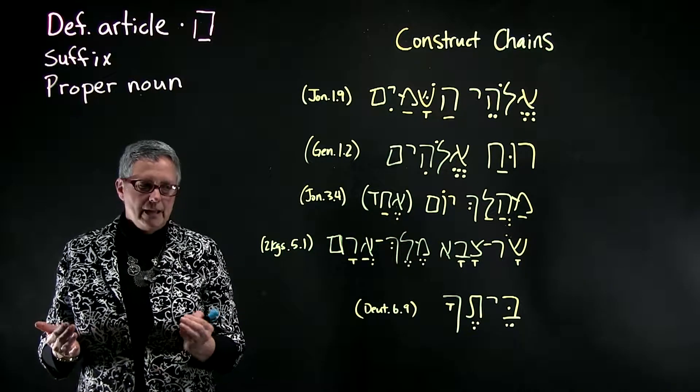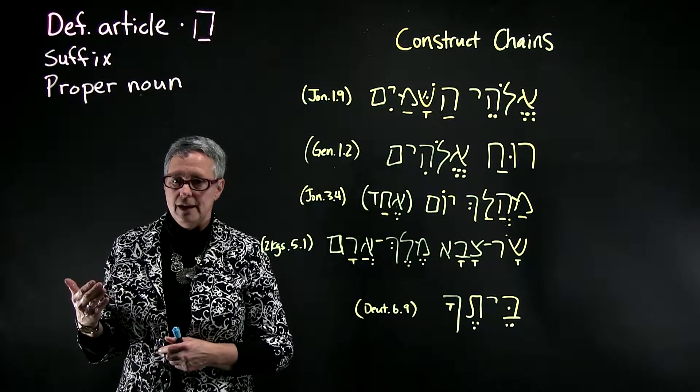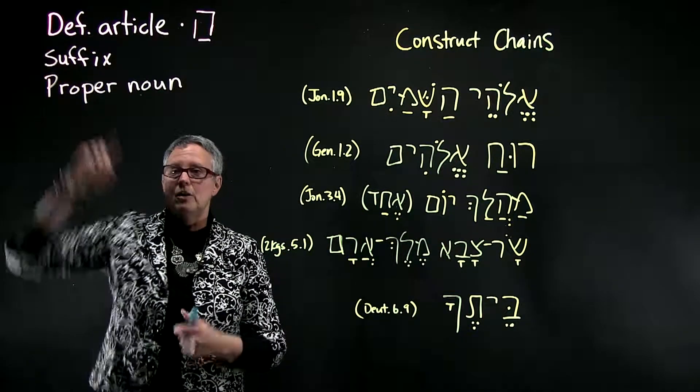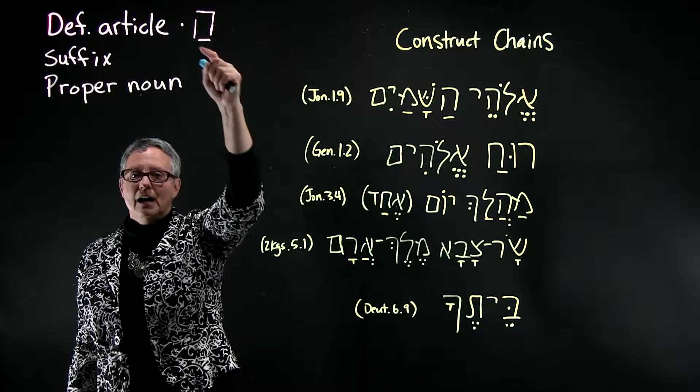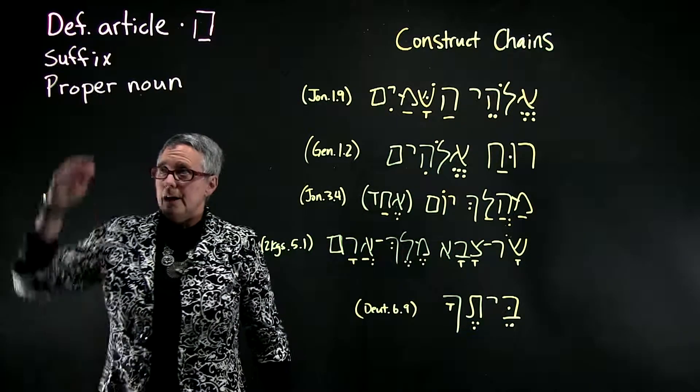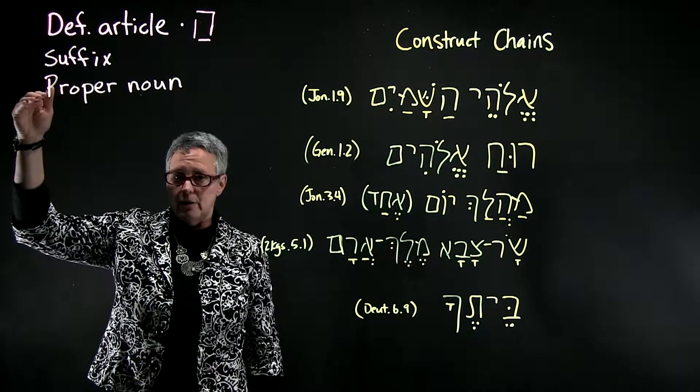What is it that makes a noun definite? You may remember that there are three things that make a noun definite. One is the definite article, the he, patah and dagesh in the next letter. Another is if it has a suffix it's definite, and if it's a proper noun it's definite.